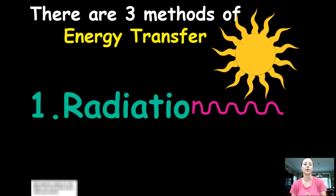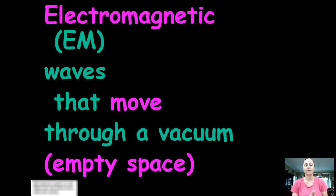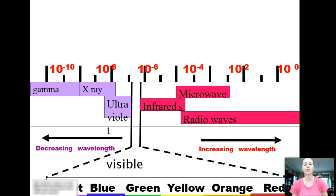It can move, as we said, through a vacuum, which is considered empty space. So these are all of the electromagnetic waves that come from the Sun.